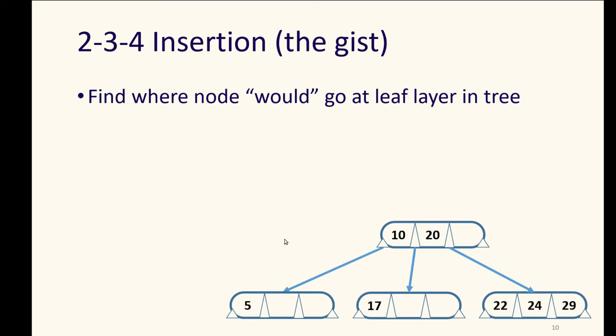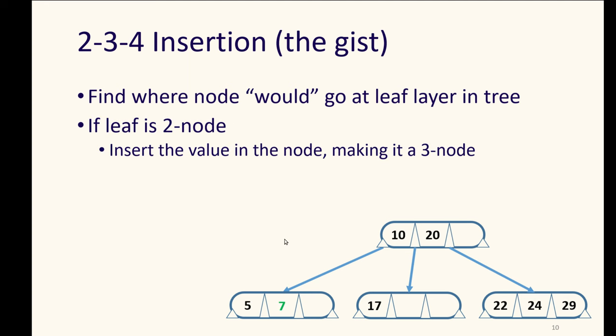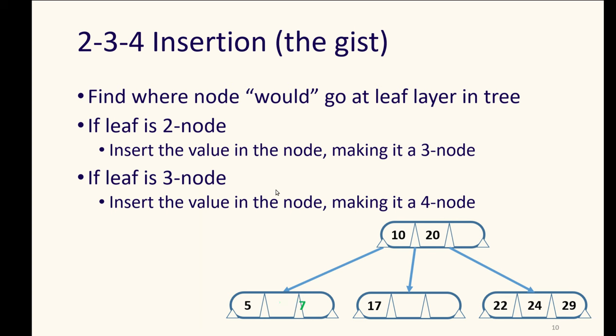To insert in a 234 tree, we can find where the node would go at the leaf layer in the tree. If we were asking to insert a number into a 234 tree, much like a binary search tree, we just search through to where it should have been. If the leaf that we find for a spot for it is a two node, meaning that it only had a single key, a single thing stored at that level in that node, then we can insert the value in the node. That makes it a three node. It has no children in this case because it's a leaf.